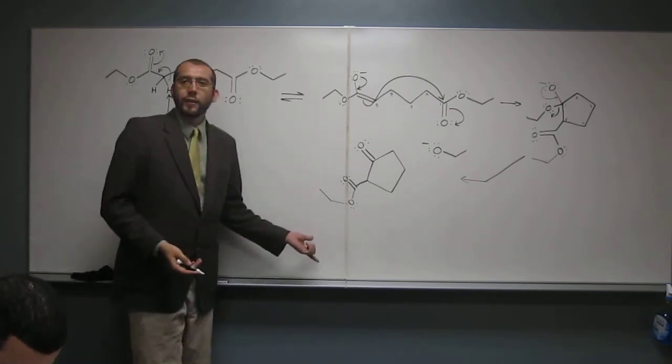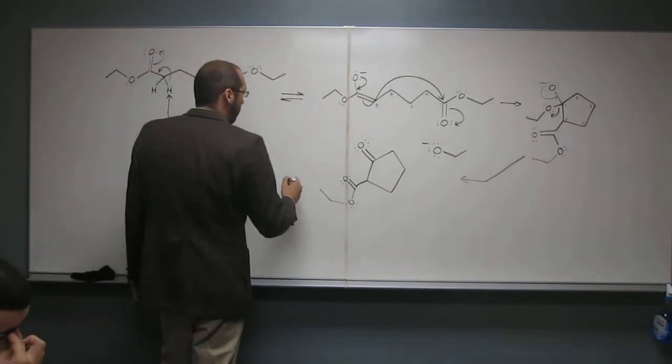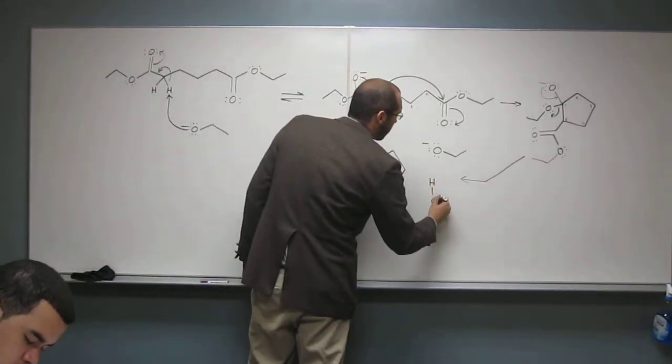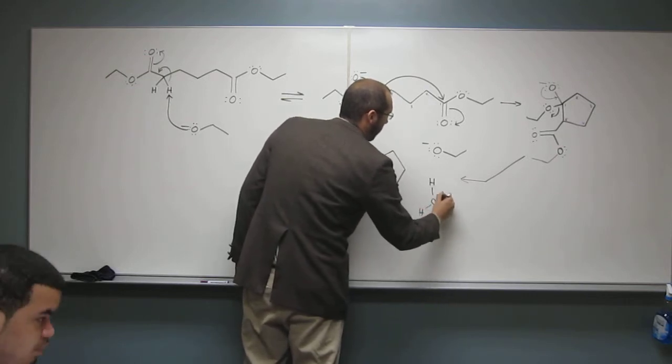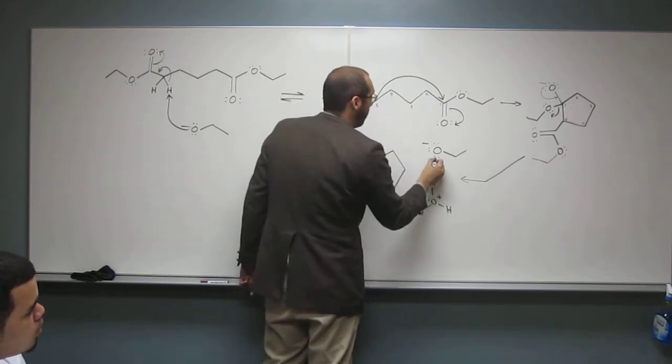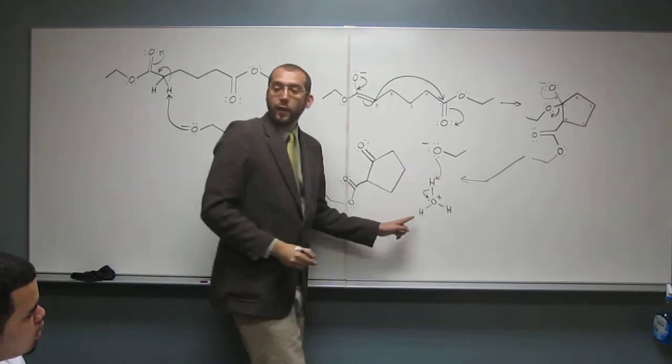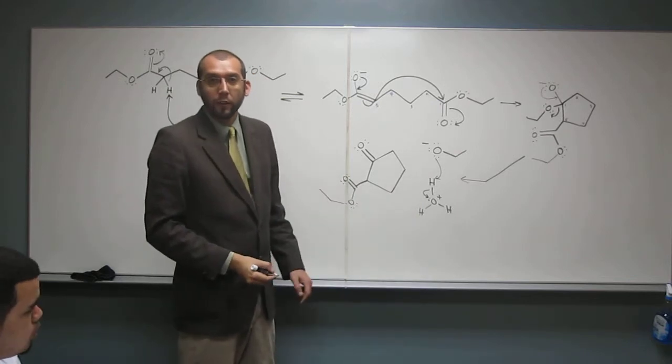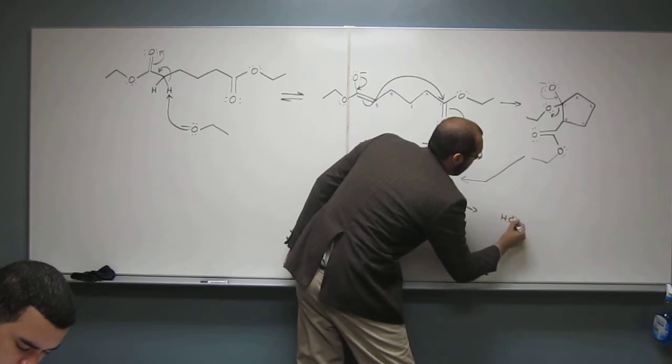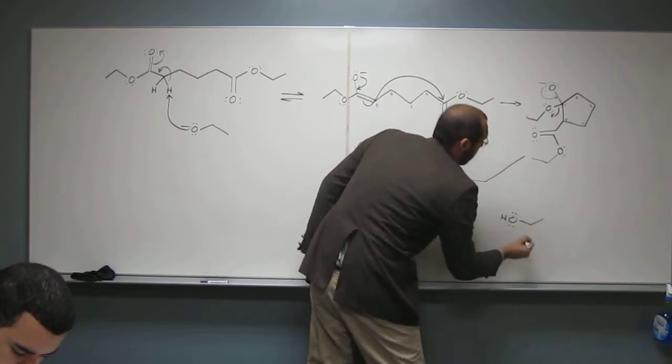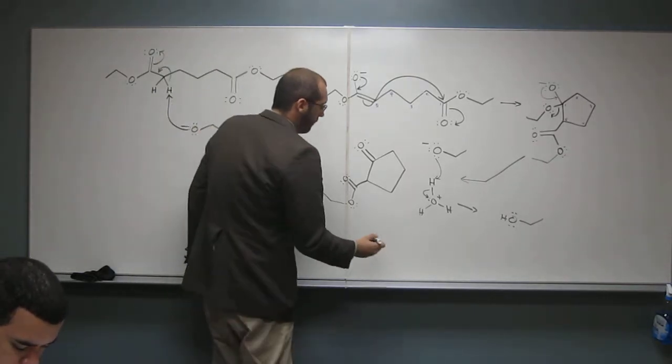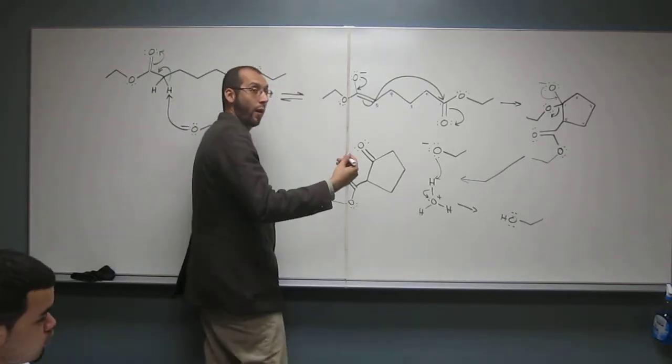So, now, second step, H3O plus. So, one thing we can think of, H3O plus is going to do. Protonate. Yeah, protonate the alkoxide. So, we're going to make ethanol as a byproduct of this reaction. Like that.